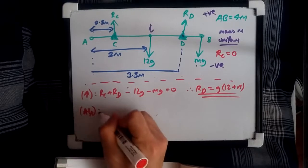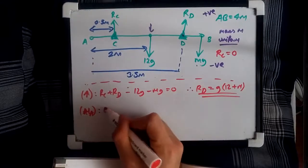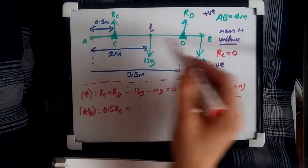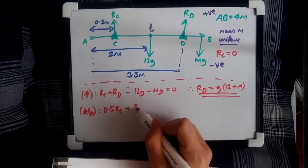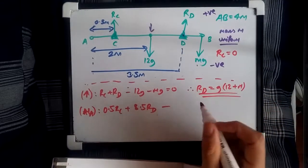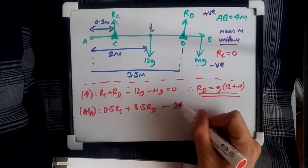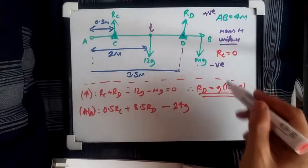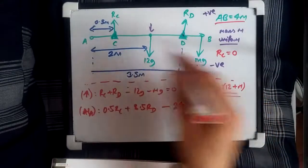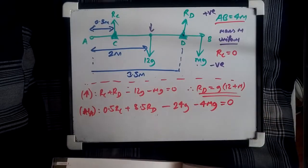So, a moment about A. We could instantly say that we have the distance, which is 0.5 times RC, plus all the across times RD, so the distance from here to here, A to D, is 3.5 times RD. And now, looking downwards, now we subtract, we've got A to 12G, so 2 times 12G is 24G. And then, A to B, which is 4 meters long, as we defined in the beginning, is minus 4 times MG. And all of this is set to 0.